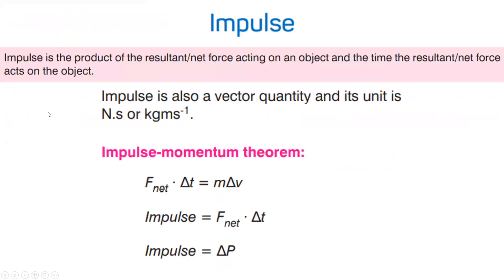Change in momentum — another name is impulse. Delta p equals p final minus p initial, which is final momentum minus initial momentum. You can write m times v final minus m times v initial, so m times delta v equals impulse — that's the first formula.